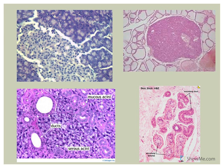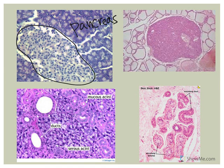Here are some examples of glandular epithelium. The pancreas is both an endocrine and an exocrine gland. The islets of Langerhans produce insulin and glucagon — hormones that regulate blood glucose levels. The exocrine portion of the pancreas produces various digestive enzymes that are secreted into the small intestine.